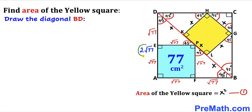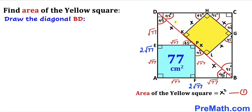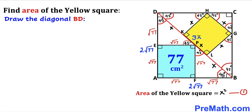So side length AD equals 2√77. Since ABCD is a square, all side lengths equal 2√77. Now let's focus on diagonal BD. Its length is made up of x, plus x, plus x. Adding x + x + x gives us 3x. So diagonal BD has a length of 3x.